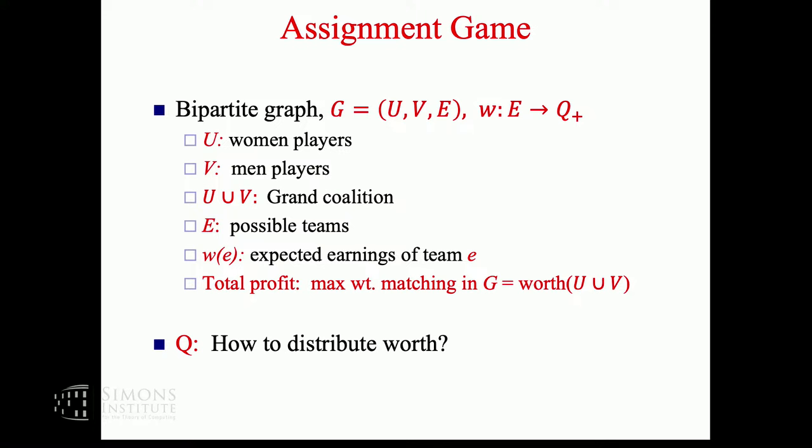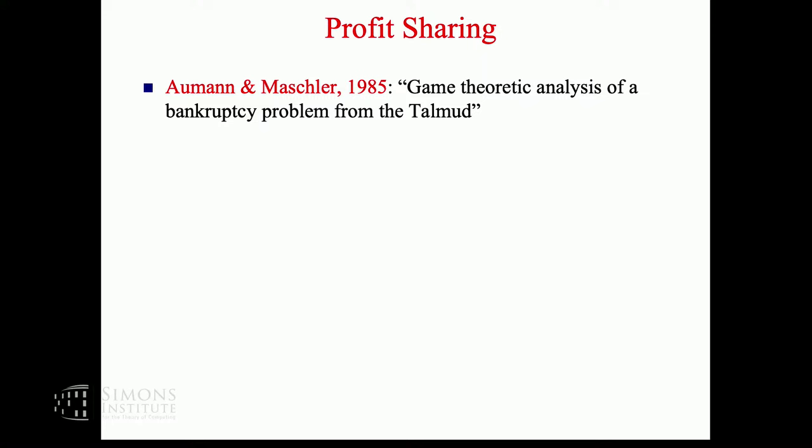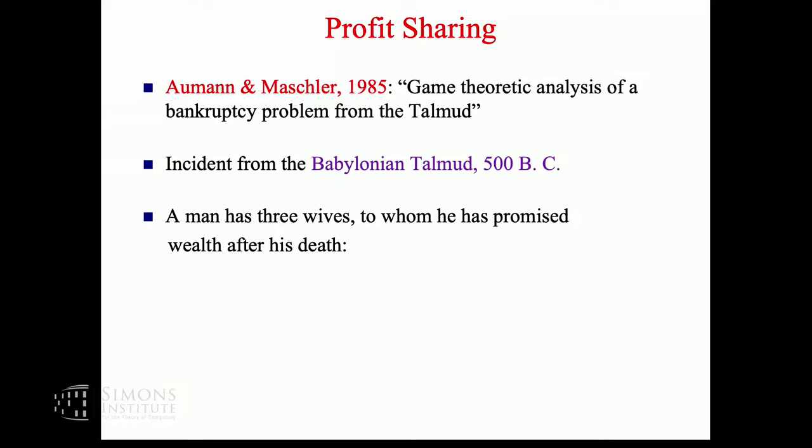This brings me to profit sharing, which is really a central concern ever since humanity became somewhat intelligent. The proof lies in this amazing paper of Aumann and Maschler on the bankruptcy problem from the Talmud. There's an incident from the Babylonian Talmud from 500 BC - a man who has three wives is trying to promise these wives some wealth after his death. Let's say he promises 100, 200, and 300 rupees.